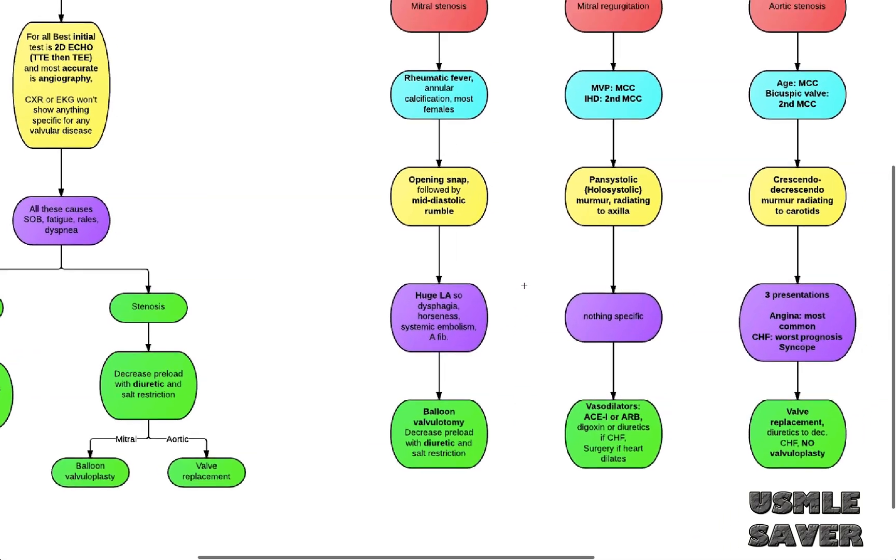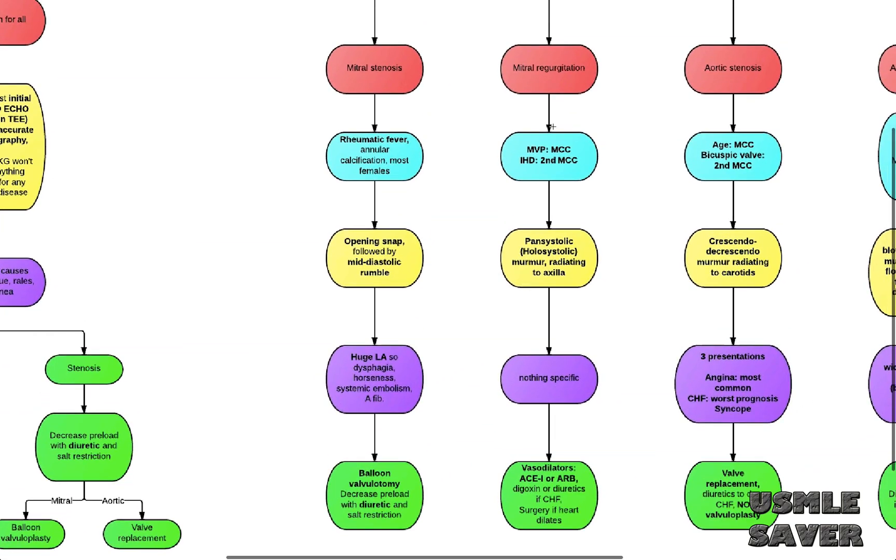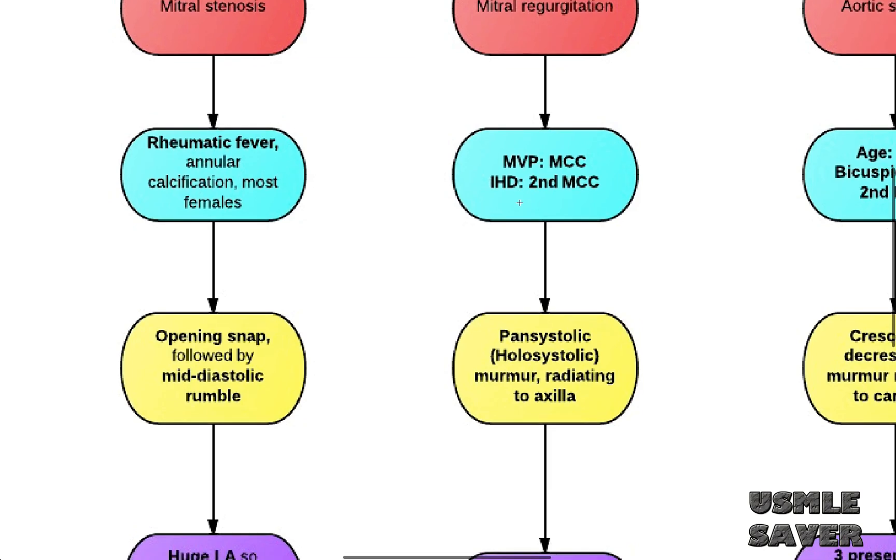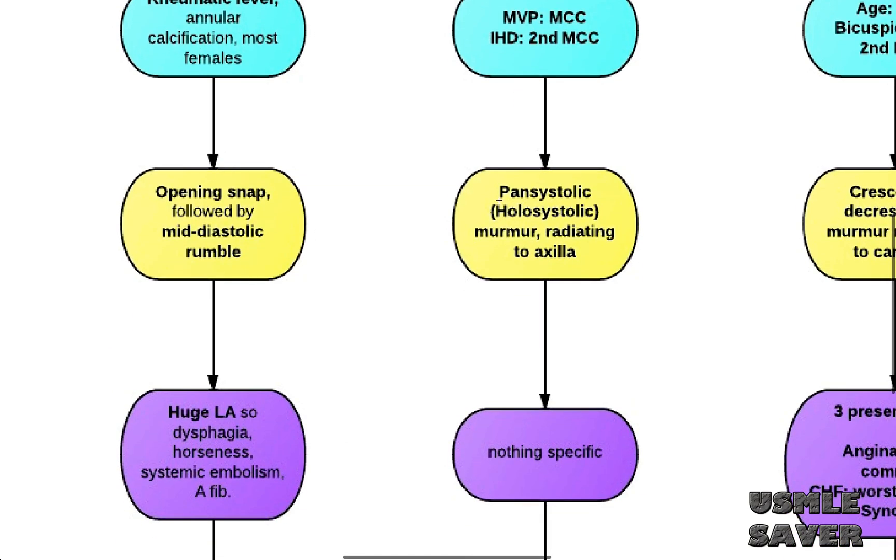All right, now let's move on to mitral regurgitation. Here, most common cause is mitral valve prolapse. Second most common cause is ischemic heart disease. Mitral regurgitation patients get specific pansystolic murmur radiating to the axilla. Pansystolic is the same as holosystolic, which means throughout the systole.